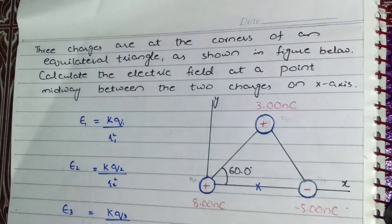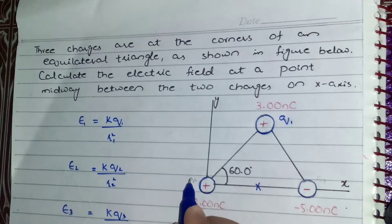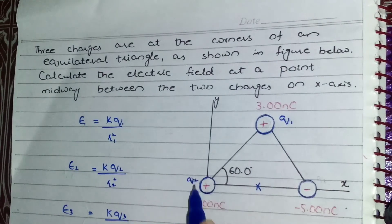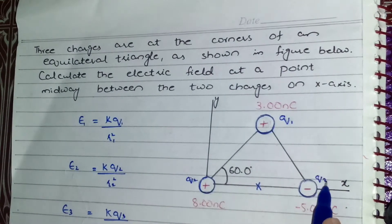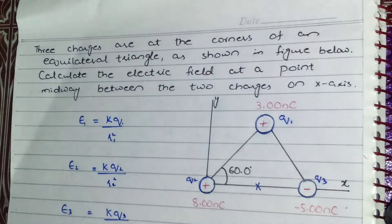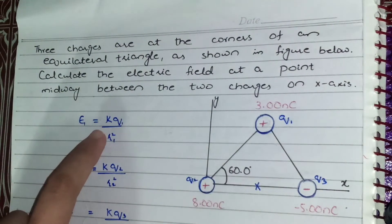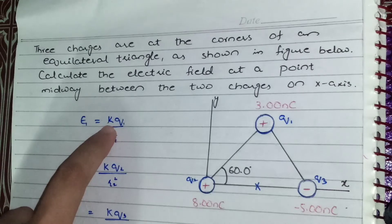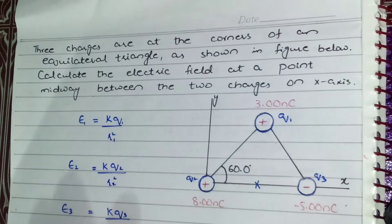Let us call this charge q1, this charge q2, and this charge q3 for our convenience. In this equation we know the value of k, q1, q2, and q3.